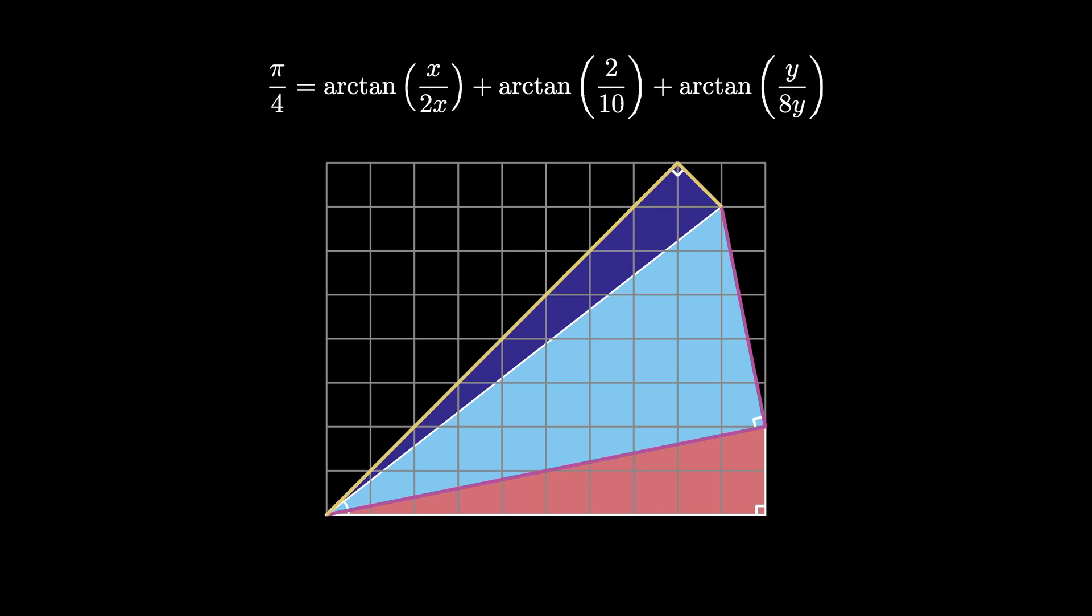But now x over 2x simplifies to 1 half, 2 tenths is the same as 1 fifth, and y over 8y simplifies as 1 over 8. Therefore pi over 4 is equal to the arctangent of 1 half plus the arctangent of 1 fifth plus the arctangent of 1 eighth.